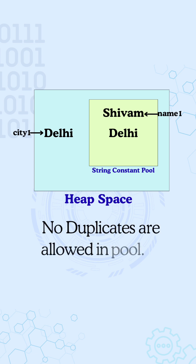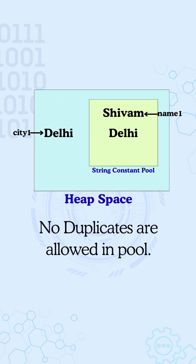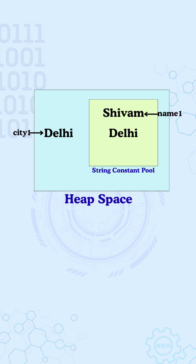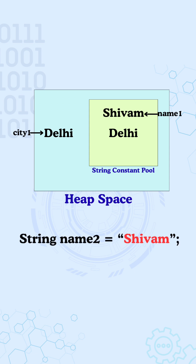The rule for the string pool is that there can be no repetition of the same literal. So if you create string name2 is equal to shivam, a new literal won't be created. Instead, name2 will point to the same location as name1.